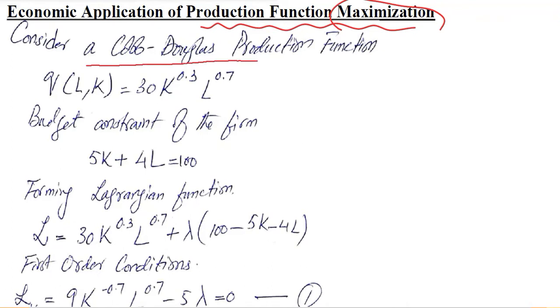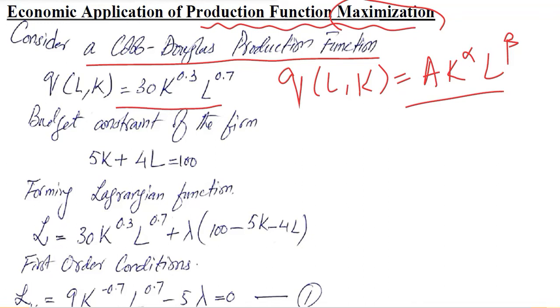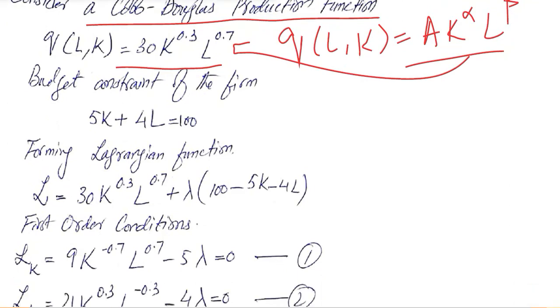It is actually a Cobb-Douglas production function because it conforms to the standard form of a Cobb-Douglas production function. The standard form is as follows. You see that it is conforming to the standard form. However, we have a numerical situation which is more interpretable.